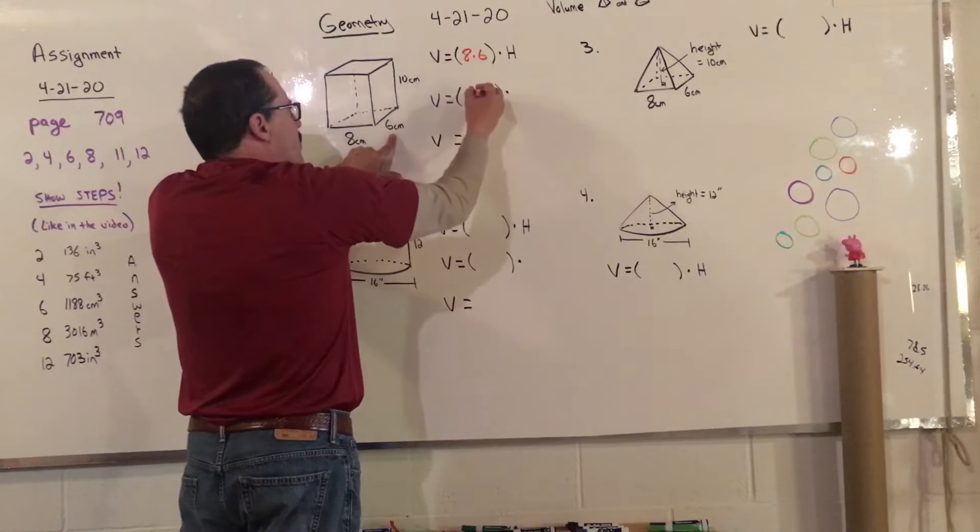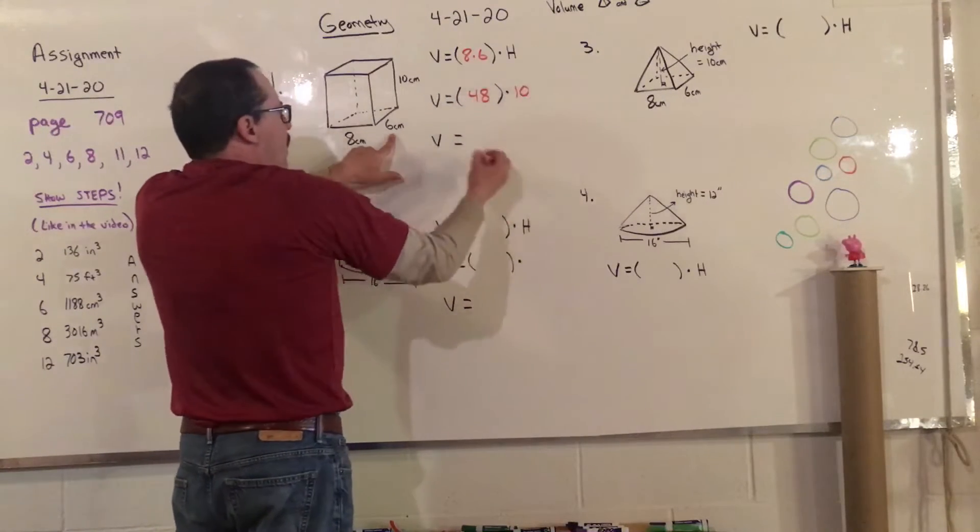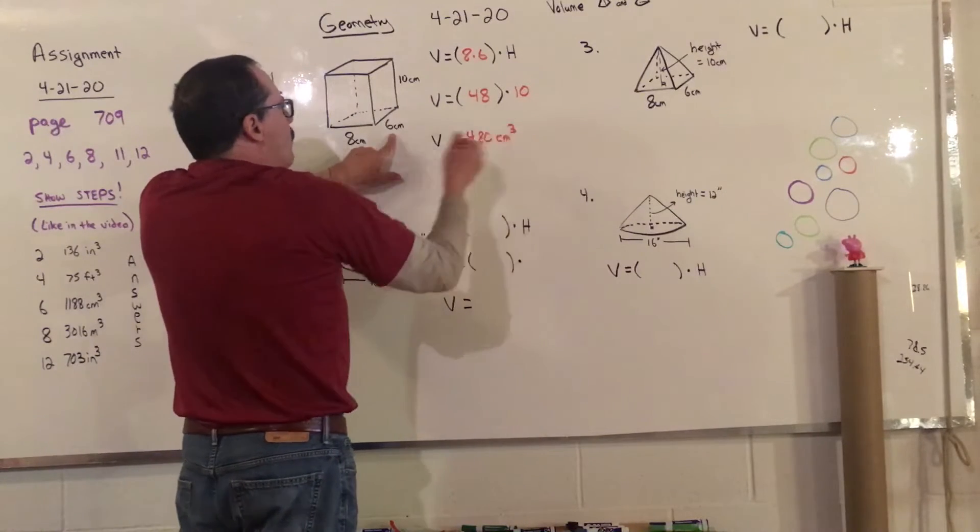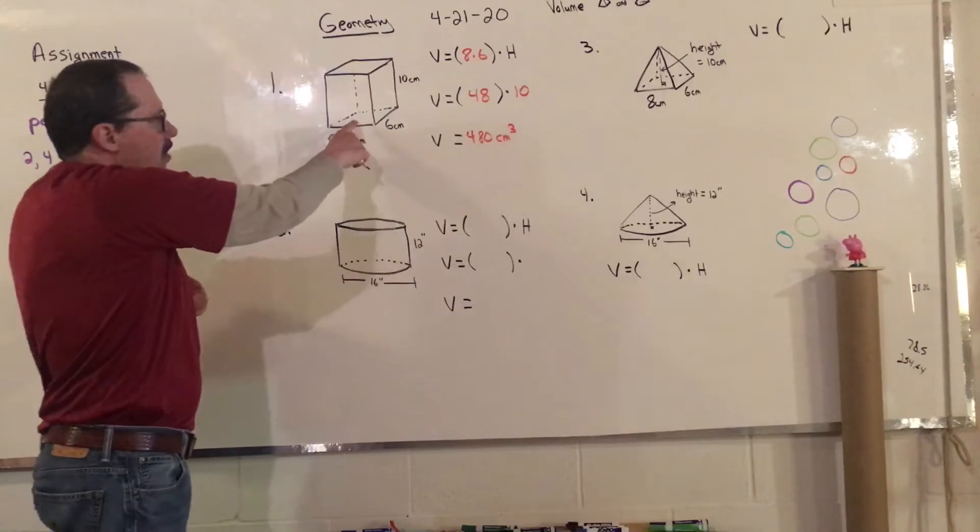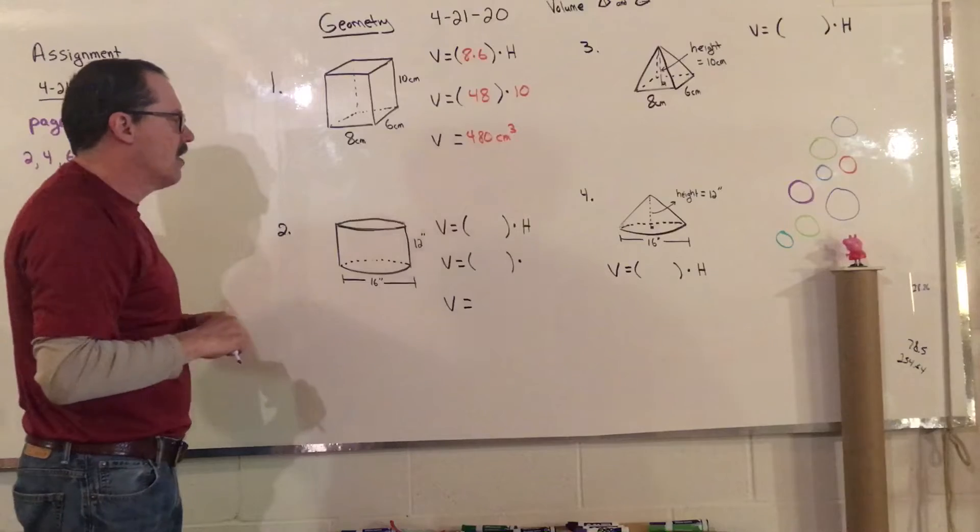And so down here, 8 times 6 is 48, and I'm going to multiply it by 10, and that would give me 480, and then it'd be centimeters cubed. So basically it tells me that 48 cubes fit in the bottom, and then I'm going to stack them 10 high, which would give me 480 centimeters cubed.